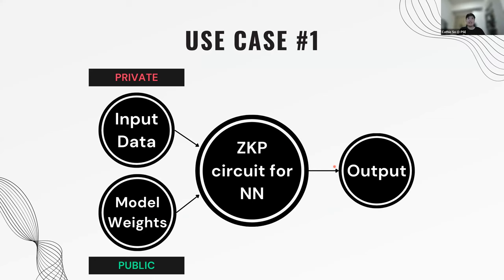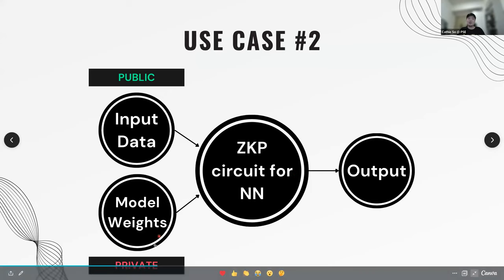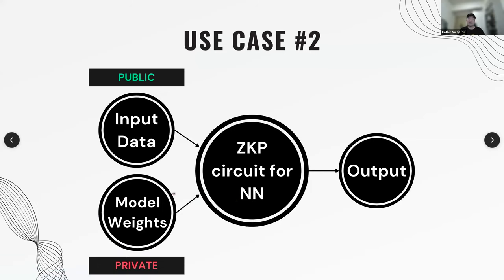The natural arising use case is the opposite: public input data and a private model. You might ask what that's good for — actually, this is what we use a lot nowadays. If you've used ChatGPT or image generation like Midjourney, those Web2 companies want to keep their model private. That's the precious asset of their training and design process. But we might want to prove: I generated an image of an astronaut on a horse from a prompt I inputted. In that case, you'd want your input data to be public.